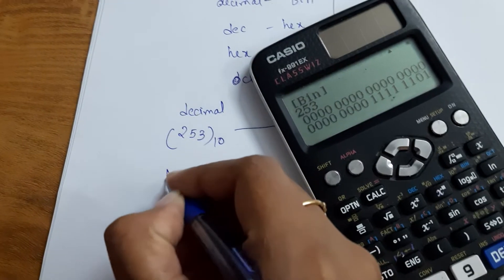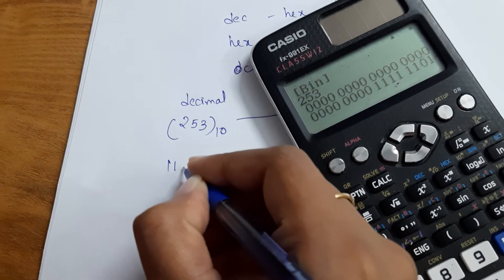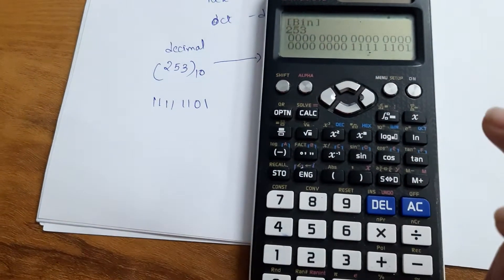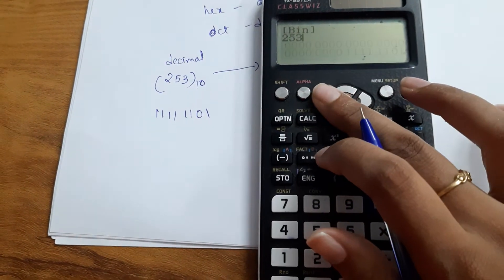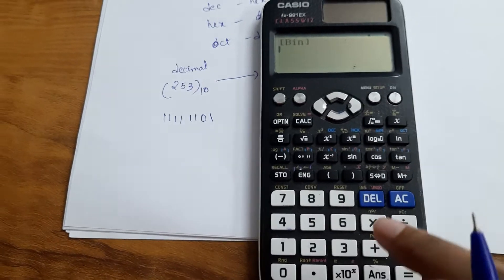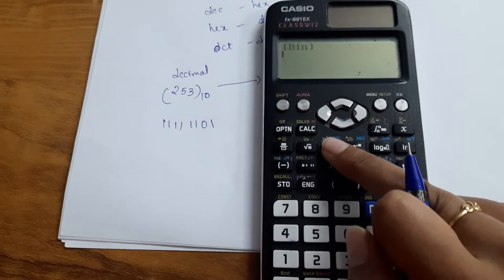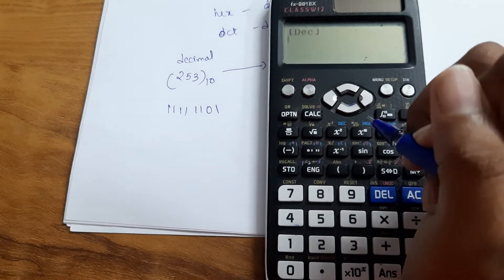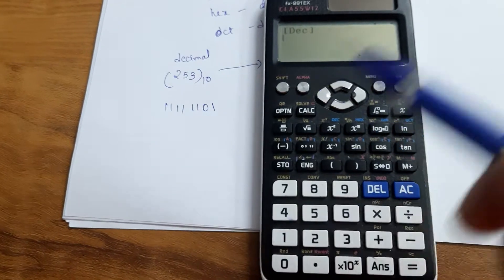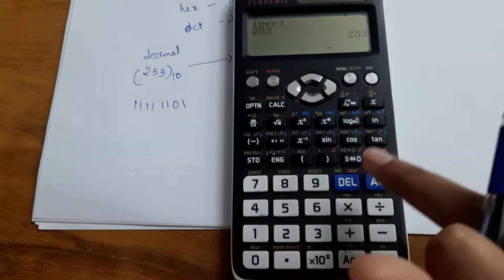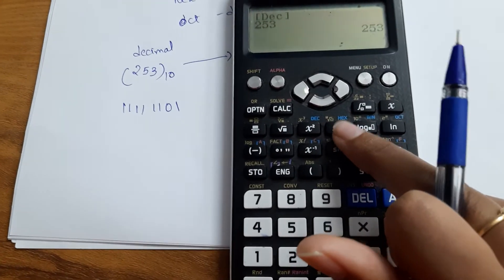Right, so note it down: that is 11111101. Now suppose we need a hexadecimal value. So what we are doing? Clear the value, click this clear here, delete. Then now we need, again change it to decimal. See, we should change it into decimal because we are now, we want a decimal to hexadecimal, right? So again, 253 equals to, then we got hexadecimal. This is hexadecimal, that is ED.